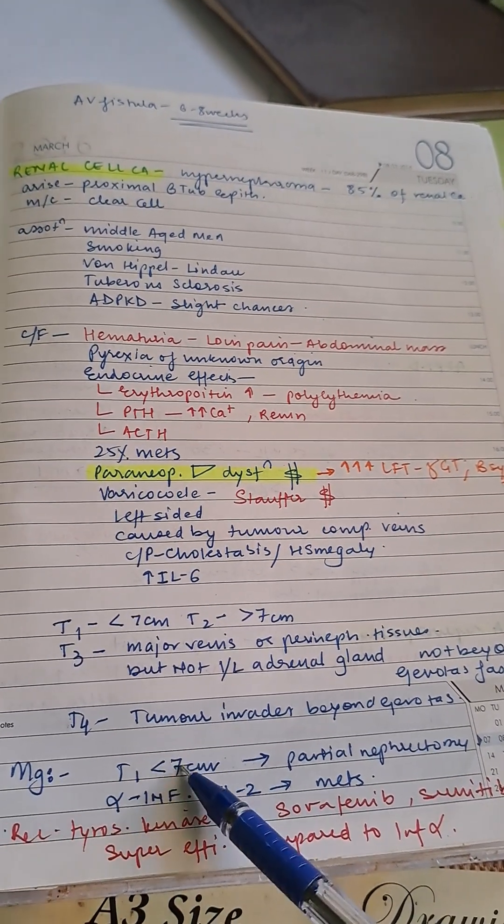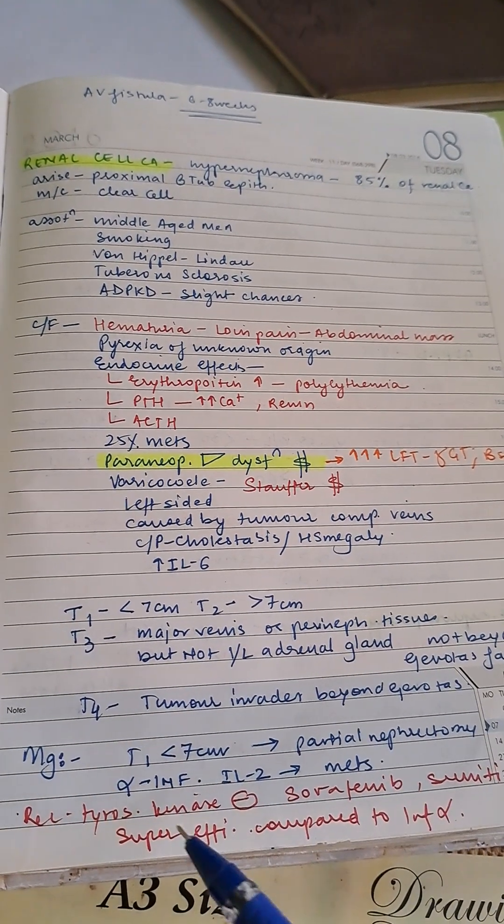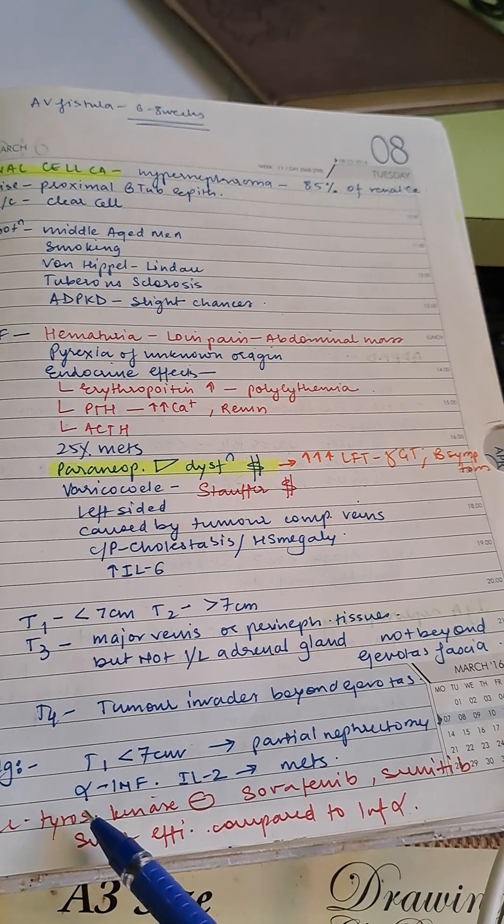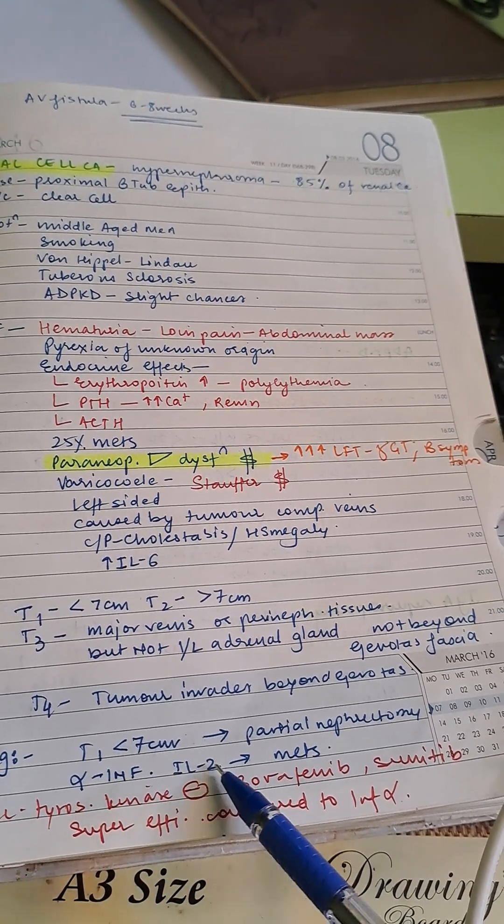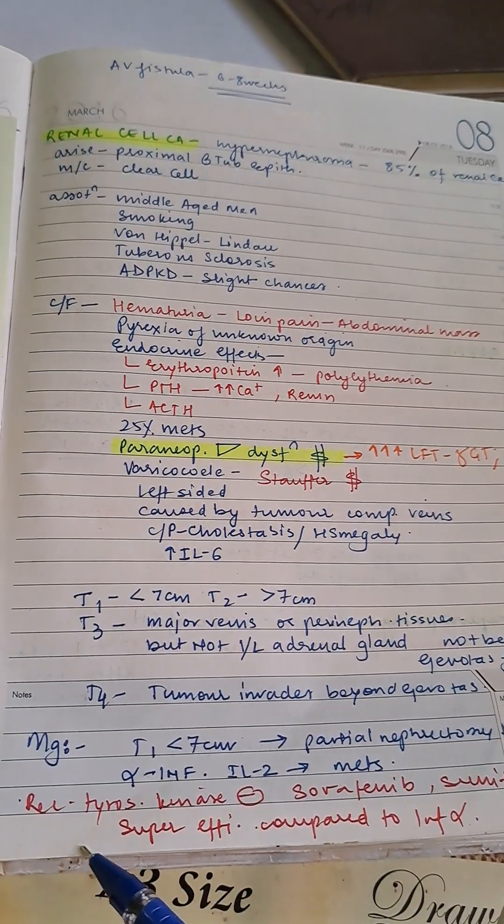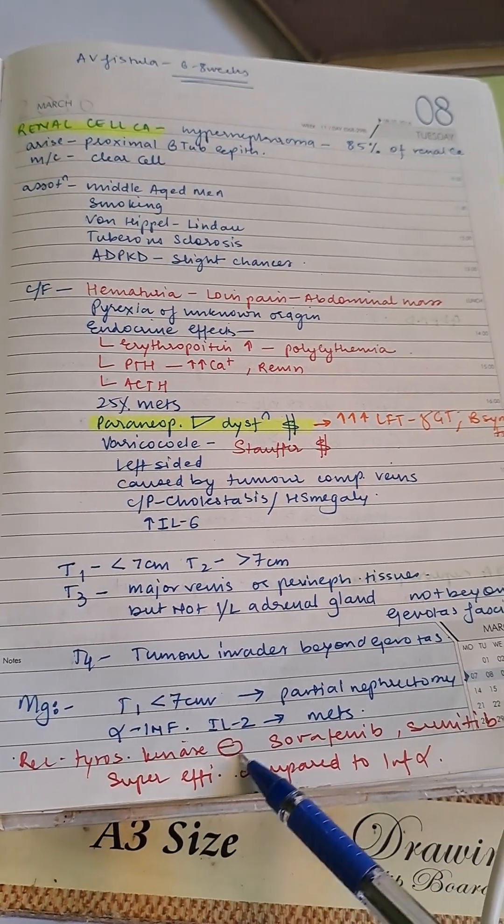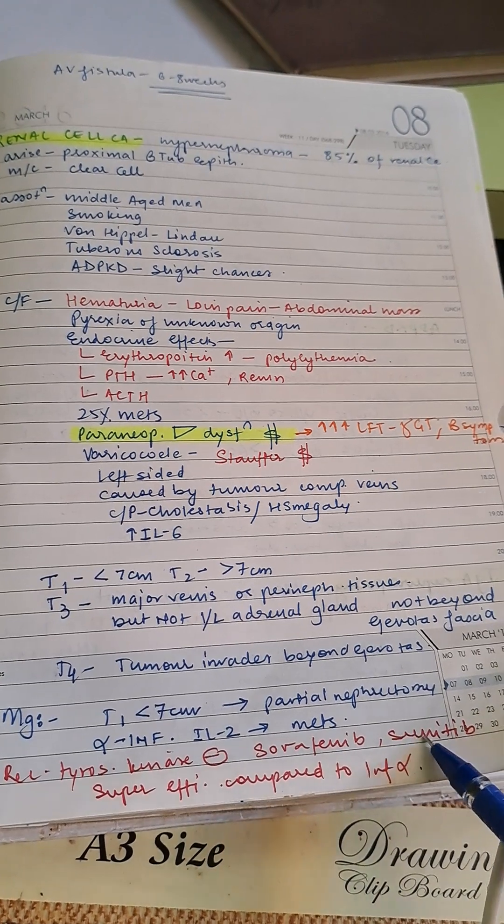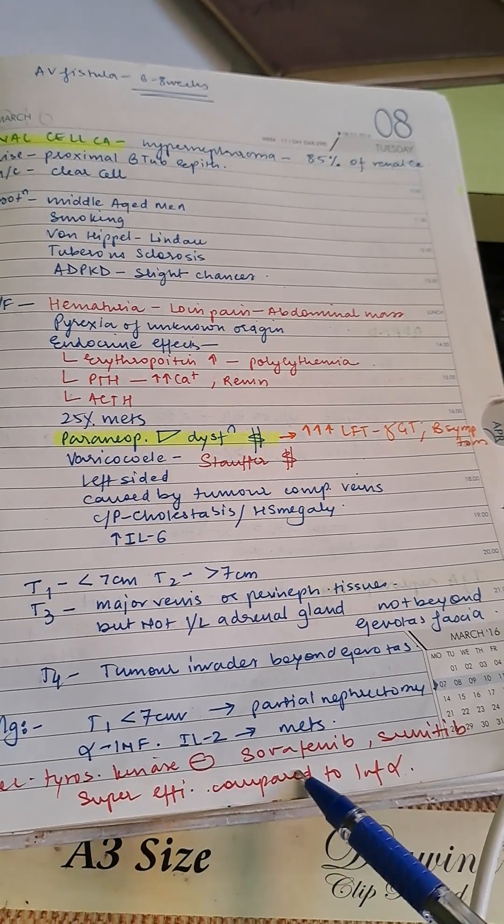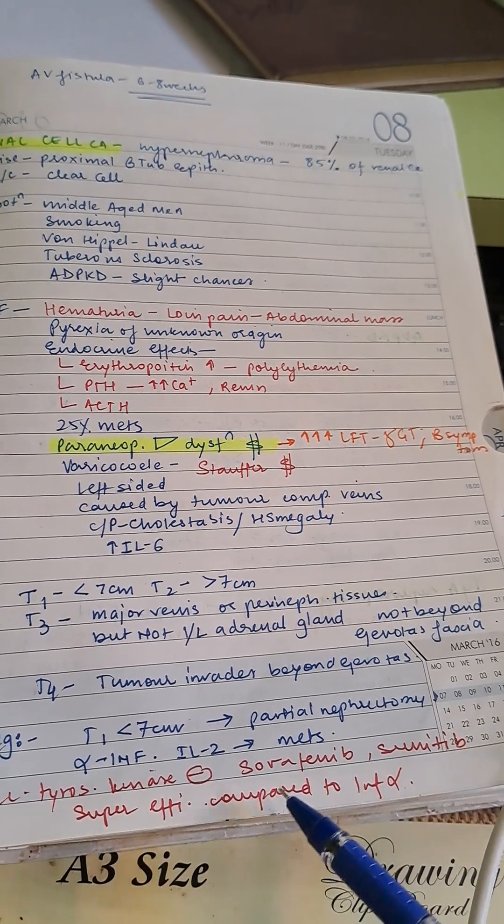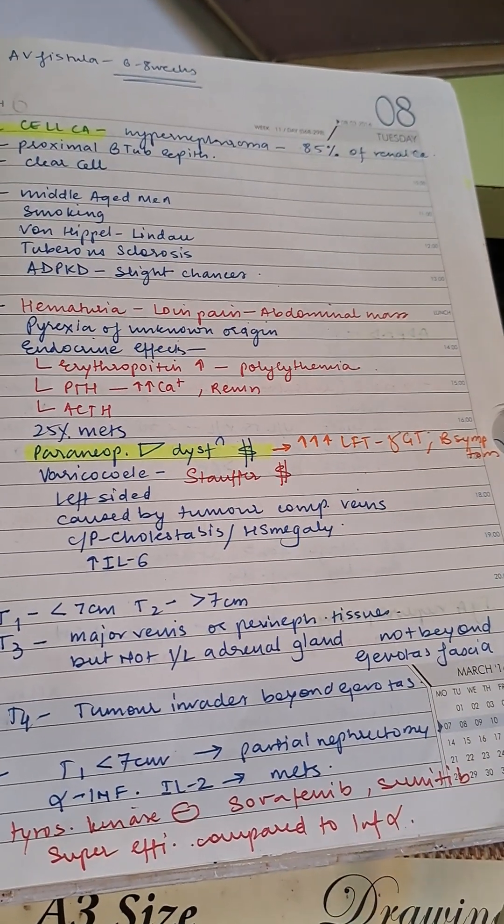Management differs by tumor size. T1 gets partial nephrectomy. Give alpha interferon and interleukin 2 for metastasis. Receptor tyrosine kinase inhibitors like sorafenib and sunitinib are superior efficacious compared to interferon alpha. These two are better for renal cell cancer.